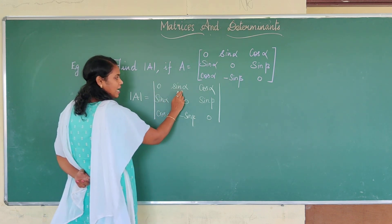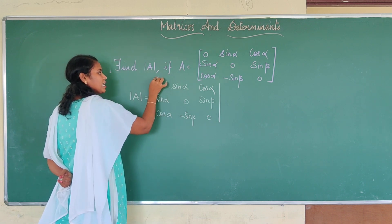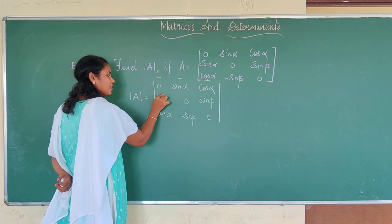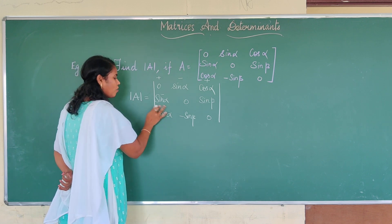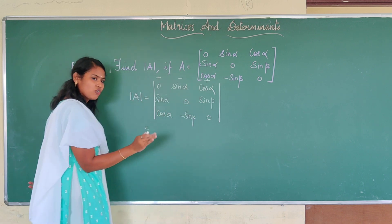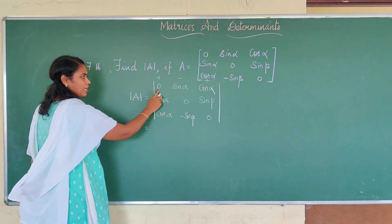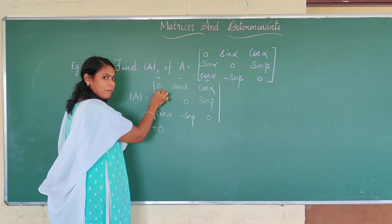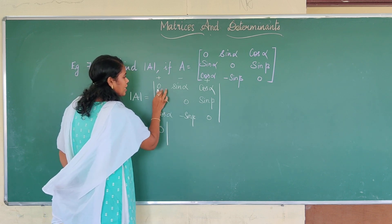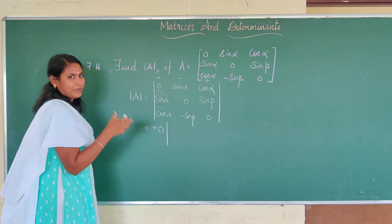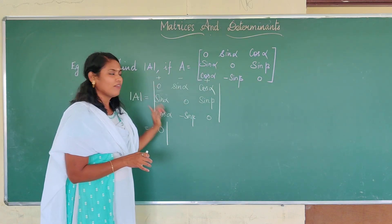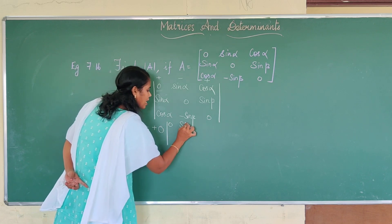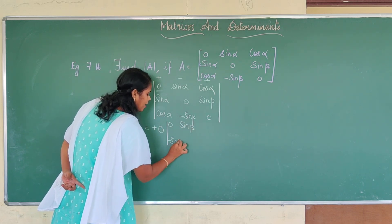My first row is 0, sin alpha, and cos alpha. You know the sign for the first element is always positive, second element is minus, and third element is positive. We are going to find the determinant value with respect to the first row, so we will take plus, minus, plus. The sign of 0 is plus. We will take that element and find the minor of this 0. I have to hide the row and column where 0 is present and take the remaining elements into that minor, which are 0, sin beta, minus sin beta, and 0.